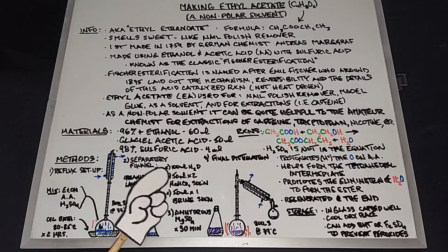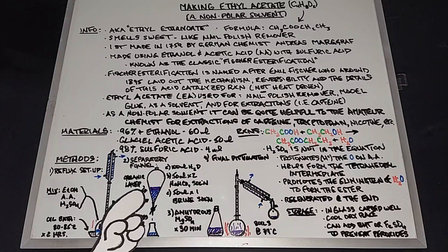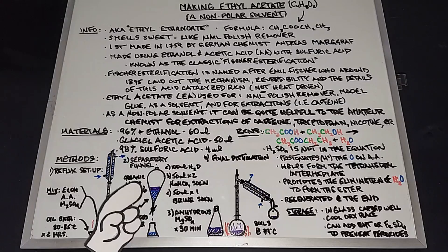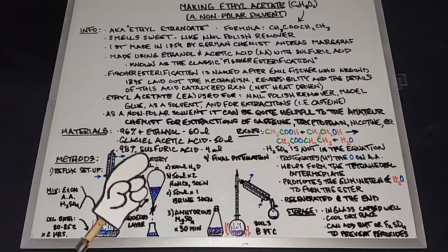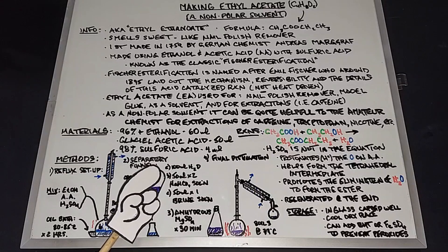Then we'll do washes twice of 50 milliliters of a sodium bicarb solution, which is mainly meant to neutralize the sulfuric acid. When we're shaking this and mixing it, we'll need to vent this quite often because of the carbon dioxide that forms. If you don't, something will definitely pop.